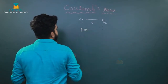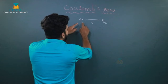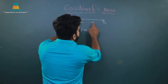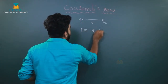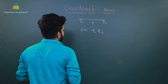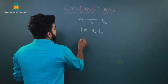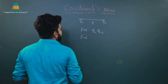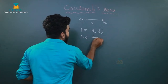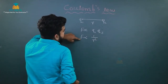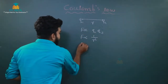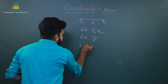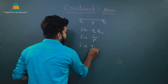By Coulomb's Law, the electrostatic force between these charges is directly proportional to the product of the magnitude of the charges, so F is directly proportional to q1 q2. The electrostatic force is also inversely proportional to the square of the distance between the charges, so F is inversely proportional to r square.